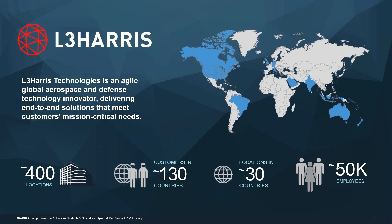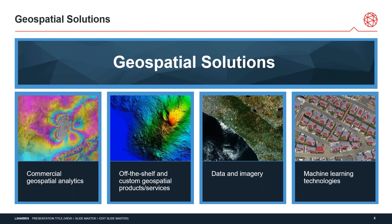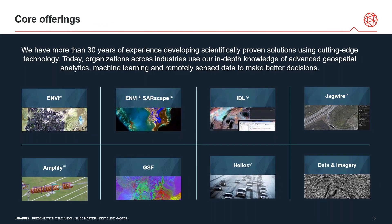I work for L3 Harris. L3 Harris Technologies is a global aerospace and defense technology innovator with over 400 locations worldwide and over 50,000 employees. Our group works with Geospatial Solutions, from commercial geospatial analytics to data and imagery or even machine learning technologies to find solutions for answers that a lot of people are asking in this day and age. For this presentation, we are going to be focusing on ENVI. We have more than 30 years of experience developing scientifically proven solutions using cutting-edge technology, and ENVI is a software platform used for the analysis and processing of multiple kinds of imagery — multispectral, hyperspectral, satellite, drone, and more.